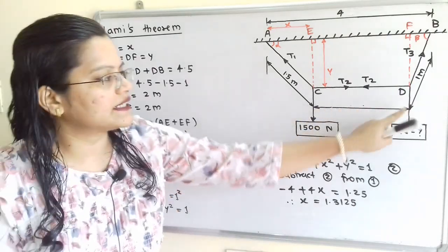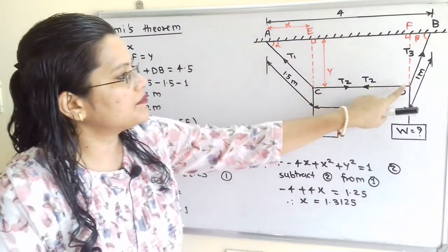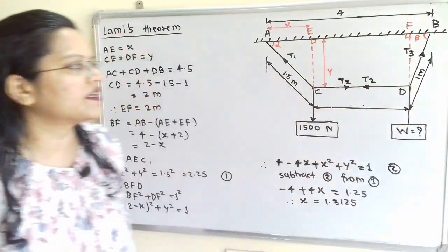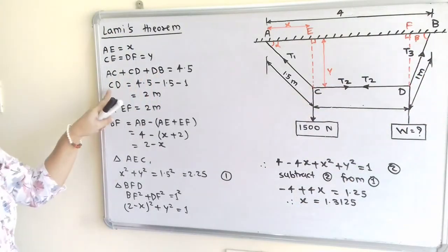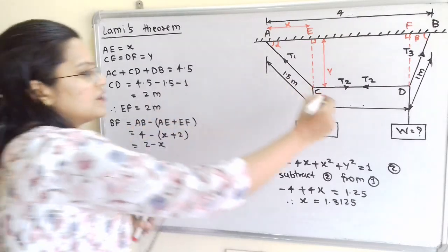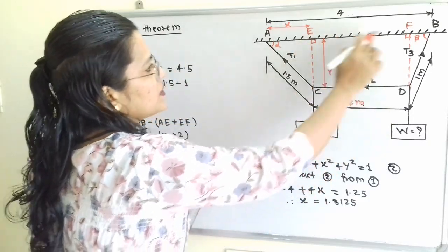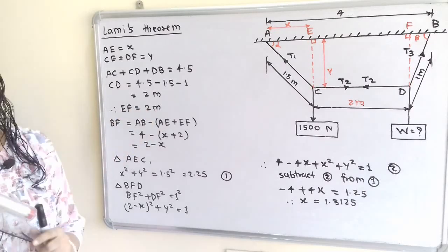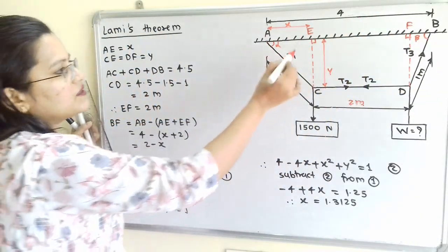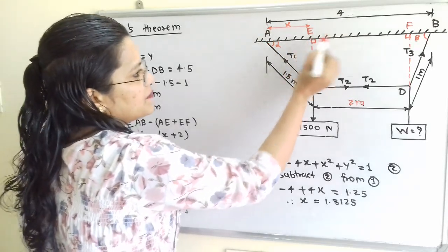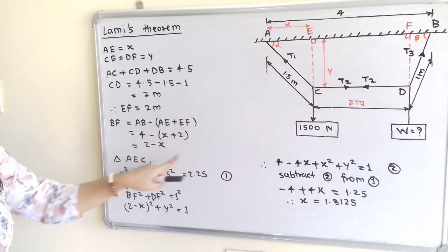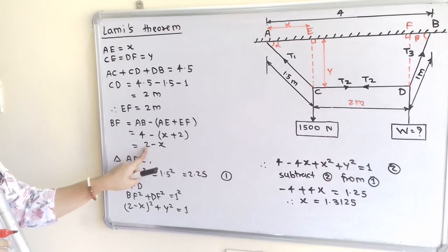To find angle alpha and beta, we first calculate CD. From the total rope length: AC + CD + DB = 4.5 m, with AC = 1.5 m and DB = 1 m, so CD = 4.5 − 1.5 − 1 = 2 meters. Since CD equals EF, we have EF = 2 m. Then BF = AB − (AE + EF) = 4 − (X + 2) = 2 − X.